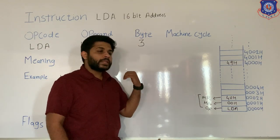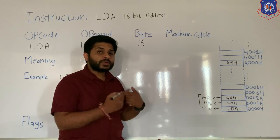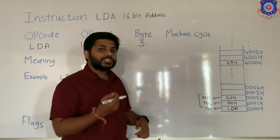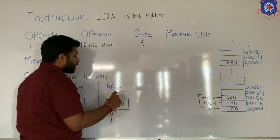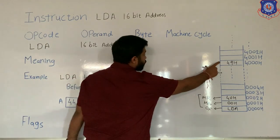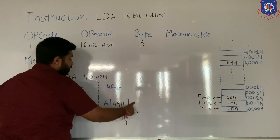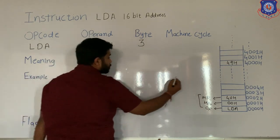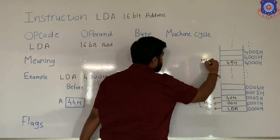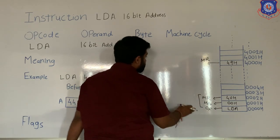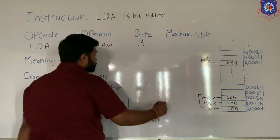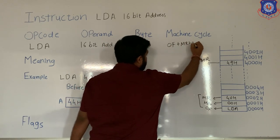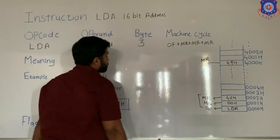The instruction is fetched, then the processor decodes it and executes. During execution, the data from 4000H is transferred to the accumulator. To transfer data from memory to the accumulator, the processor must perform one more machine cycle — memory read. So for the LDA 4000H instruction, four machine cycles are required: opcode fetch, memory read, memory read, and memory read.